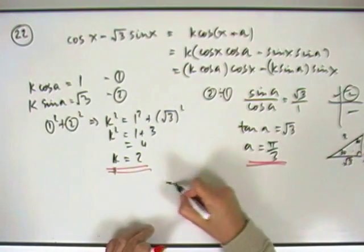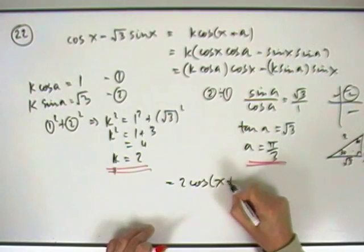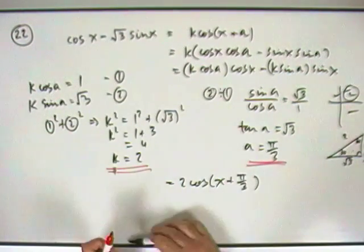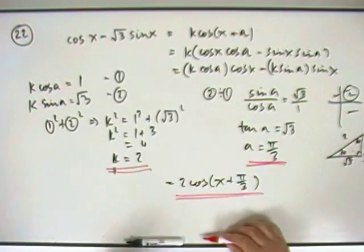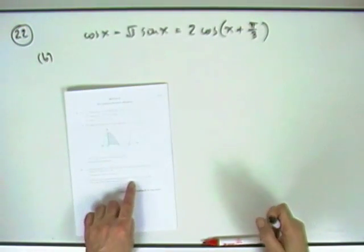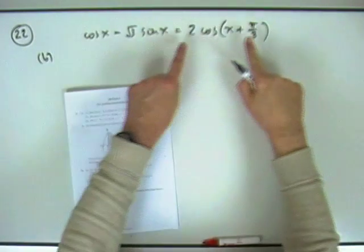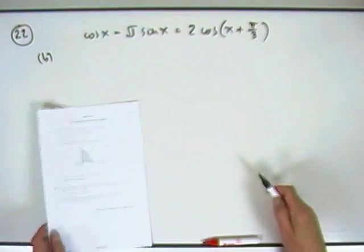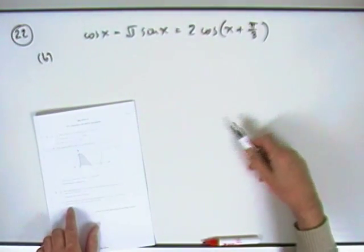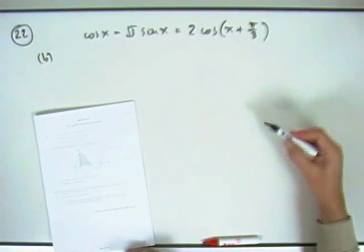So the whole thing would be two cos(x + π/3). That's the first bit. For part b, find the points of intersection in the graph of this thing, which will just be the same as that thing. Now that can be quite a bad question, but it doesn't actually ask to draw it — it just wants to know where it cuts. I'll draw a picture anyway.